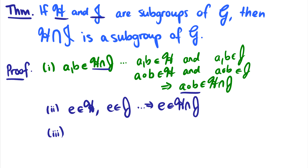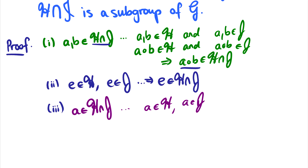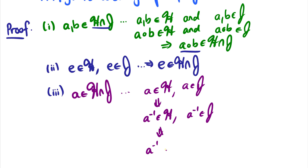The third thing to prove is inverses. Assume that a is in h intersection j. This implies that a is in h and a is in j. But h and j are groups, which means a inverse is going to be in h, and a inverse is going to be in j. Since these are both subgroups of g they will be the same inverse. Therefore a inverse is going to be in the intersection of h and j. So we've proven that if h and j are subgroups of g, then the intersection of them is also a subgroup of g.